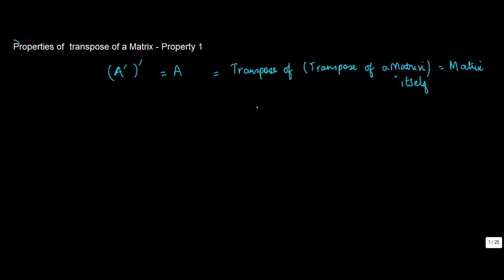So here you have a matrix A, you found out the transpose of A, and then whatever was the resulting thing, you again took the transpose of that. According to this property, that has to be equal to A itself.